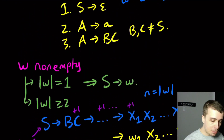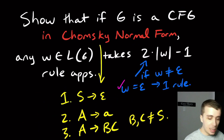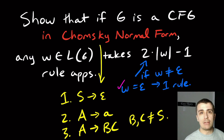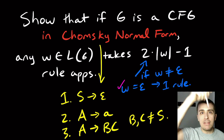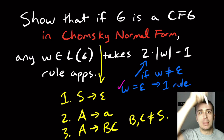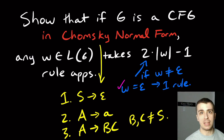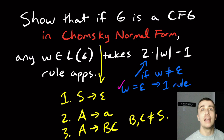That is a full proof that if we have a grammar in Chomsky normal form, every string in the language of the grammar that is not empty will take exactly two times the length of the string minus one rule applications. Hopefully that was interesting — leave thoughts about Chomsky normal form in the comments below. Please like the video and subscribe to the channel; there are many other links in the video description if you want to support the channel further. Thanks for watching, and I'll see you next time.